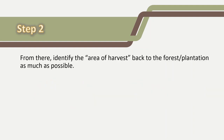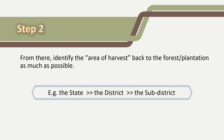Step 2: from there, you can try and identify the area of harvest back to the forest or plantation as much as possible, such as tracing all the way back to the sub-district level.